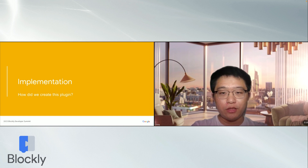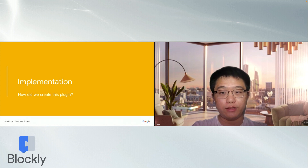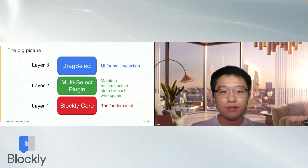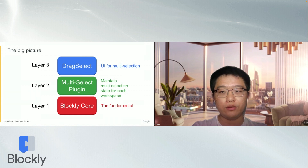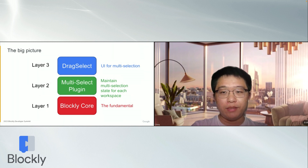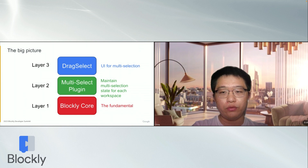After learning so many features of the multi-select plugin, you must wonder how we implement this plugin. So now I will tell you the general structure of this plugin to show how it works. We have three layers. The top layer is DragSelect, a third-party JavaScript library that interacts directly with the user, such as multi-select by clicking or drawing a rectangle. I submitted several pull requests to this library so that it can work for Blockly. DragSelect allows our plugin in layer 2 to know what blocks the user selects.